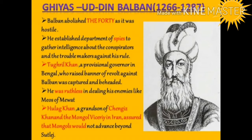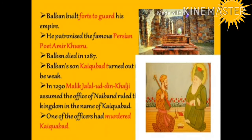Tughril Khan, a provincial governor in Bengal who raised a banner of revolt against Balban, was captured and beheaded. Balban was ruthless in dealing with enemies such as the Meos of Mewat, a Muslim Rajput community from north-western India. He maintained cordial relations with the Mongols and obtained assurance from Hulagu Khan's grandson, the Mongol Viceroy in Iran, that Mongols would not advance beyond a certain point. Balban also built forts to guard against Mongol attacks and patronised the famous Persian poet Amir Khusrau.